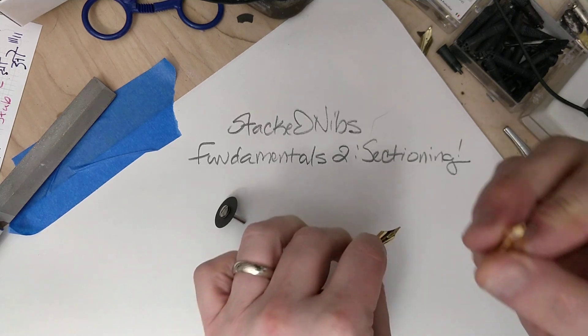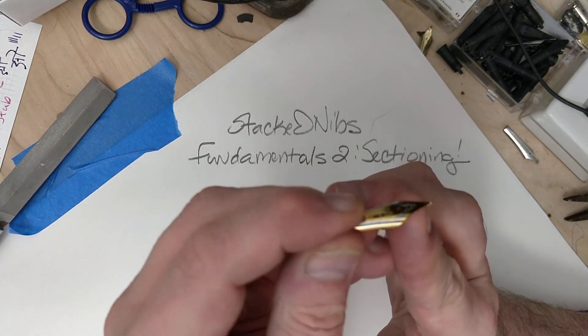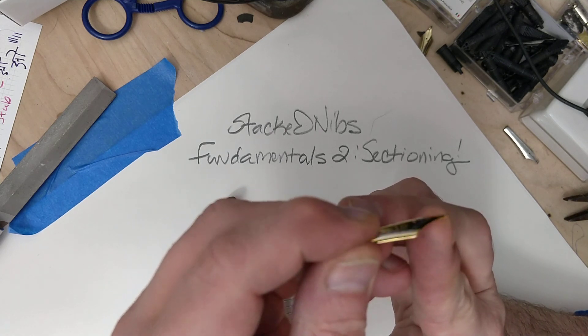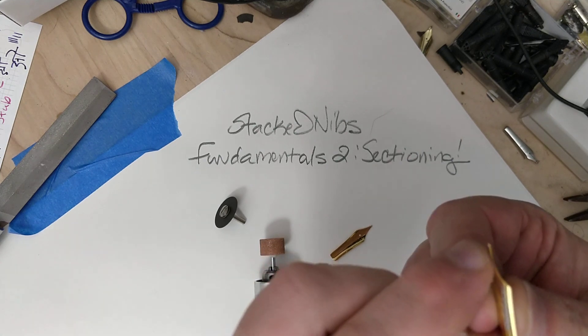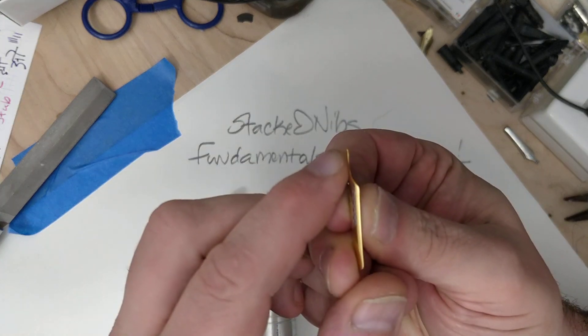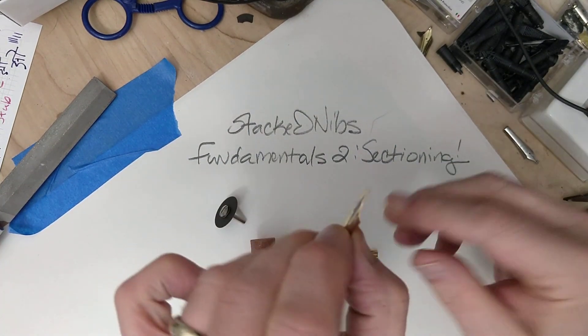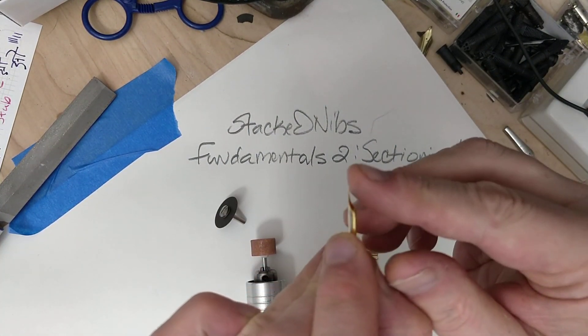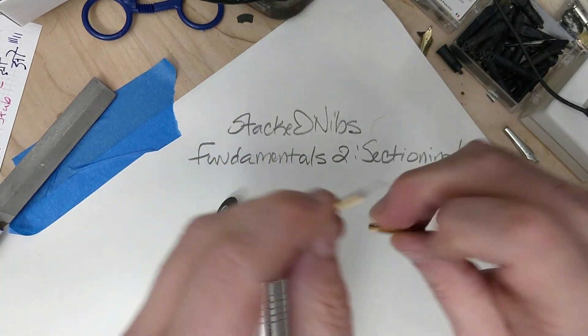And what you need to know, with the bottom nib, which is where your lockup really happens, that top bump needs to go away. With the top nib, that bump on the bottom needs to go away. Why? Otherwise they don't fit up against each other.